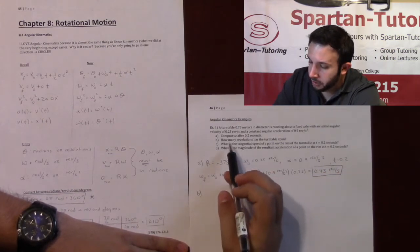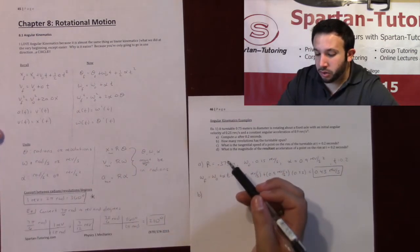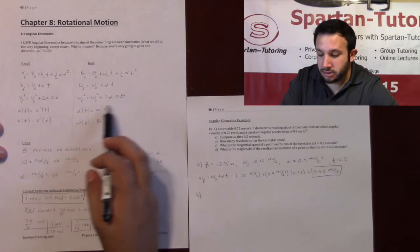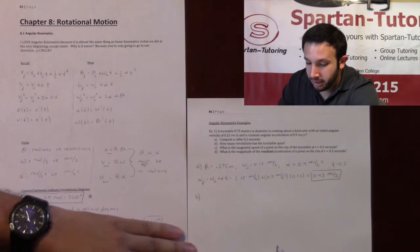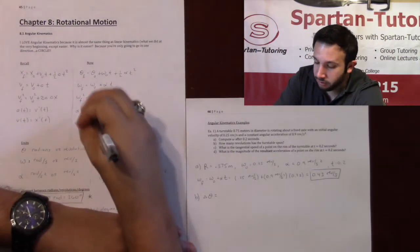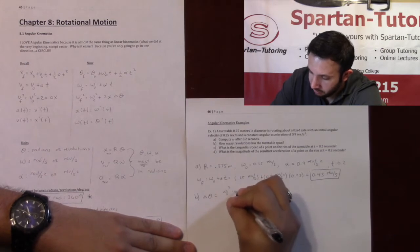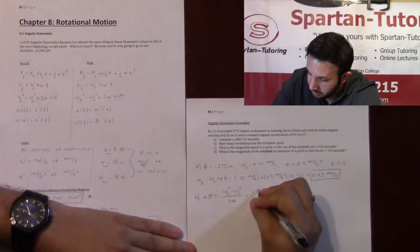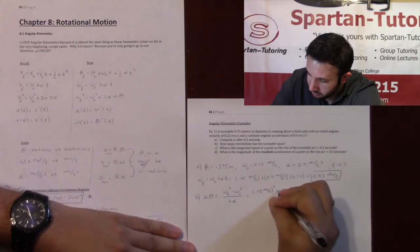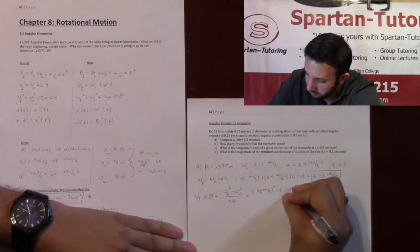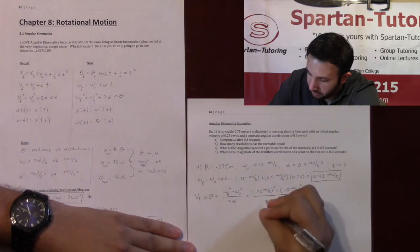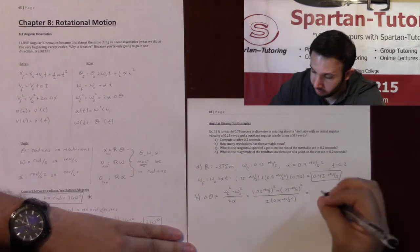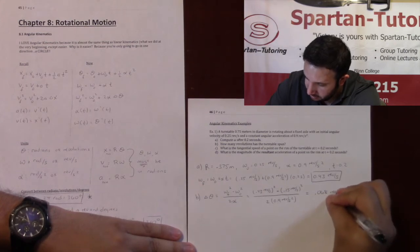Part B: how many revolutions has the turntable spun? I'm looking for delta-theta. I have omega_f, omega_0, and alpha, so I use the equation: delta-theta = (omega_f² − omega_0²) / (2·alpha). Plugging in: omega_f = 0.43 rev/s, omega_0 = 0.25 rev/s, alpha = 0.9 rev/s², I get delta-theta = 0.068 revolutions.